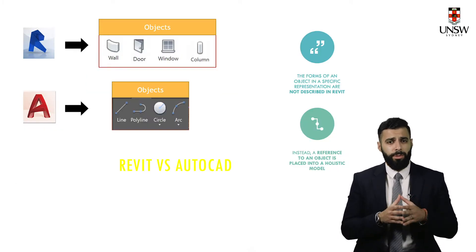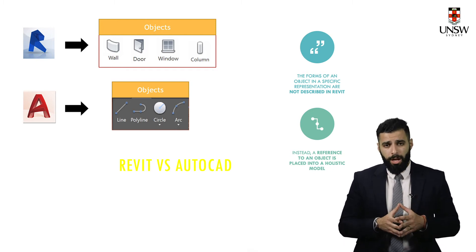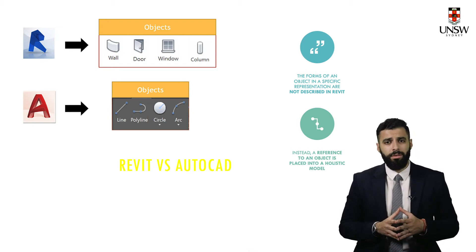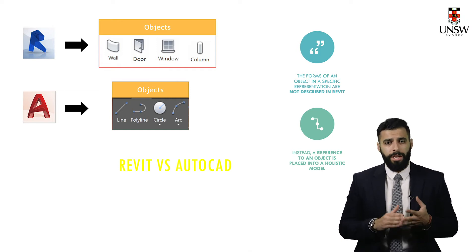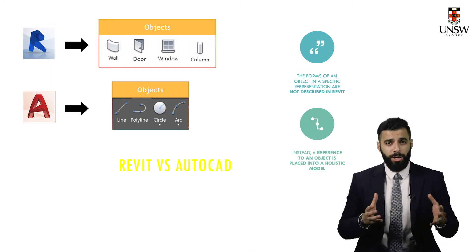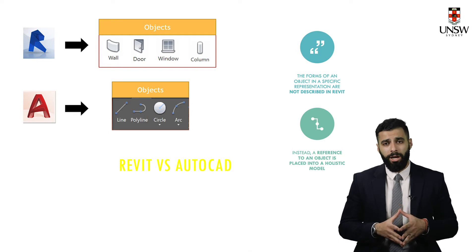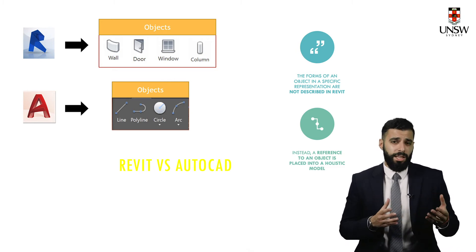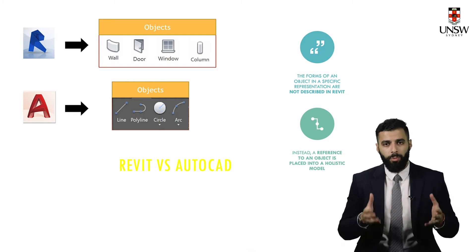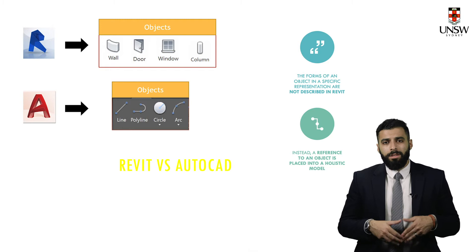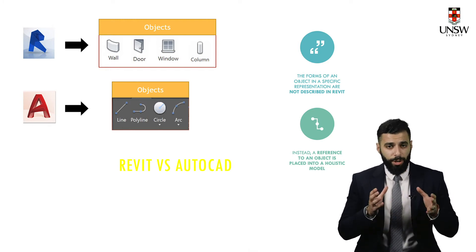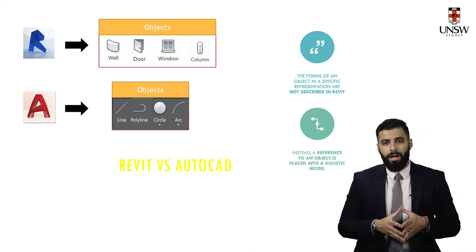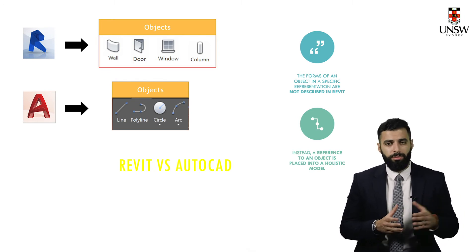Consider a house — if you want to construct one there are various components and you need to link the walls, slabs, and beams together to form the overall structure. Traditionally in AutoCAD you do that by drawing lines, polylines, circles, and arcs — all of which are 2D — in such a way that they somehow represent a particular object such as your slab or wall. In Revit it's different because you insert the specific fully-constructed object, such as the wall, placing it in the model instead of drawing it out via lines as you would in AutoCAD.